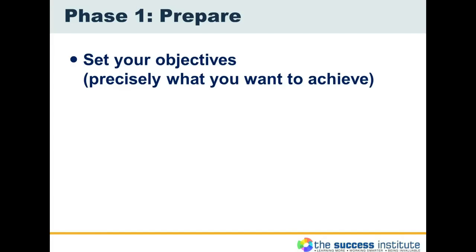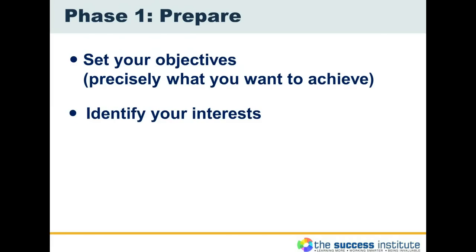Your main objective might be to buy the home. A sub-objective might be the terms — do you want a 30-day settlement, a 60-day settlement, or a 120-day settlement? Ultimately you may not be able to change the settlement time, but have you been able to purchase the house? So therefore what is your main objective?